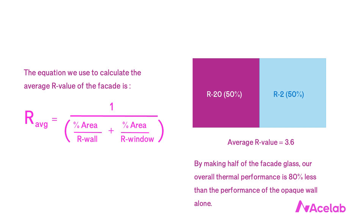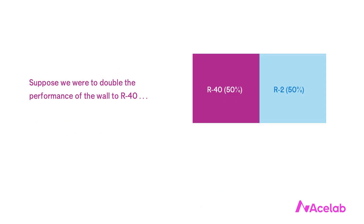I picked these numbers on purpose. A standard residential 2x6 wood wall has R21 cavity insulation, and R2 is the same as U0.5, which is pretty average for residential glass — it's also about what we see in even thermally broken commercial aluminum windows and curtain walls. Let's take this further: suppose we were to double the performance of the wall to R40. To get a standard residential wall from R20 to R40, we have to add around 4 inches or more of exterior insulation. That has some pretty significant cost and design implications.